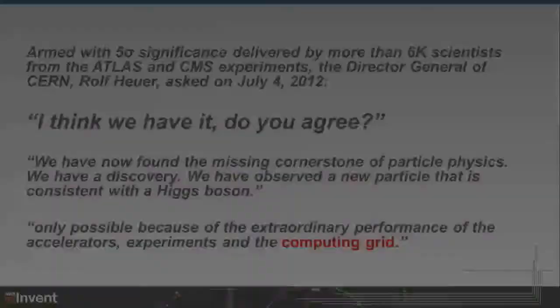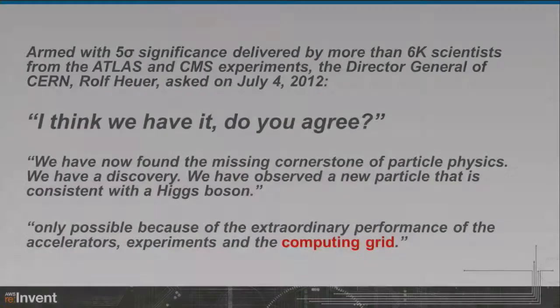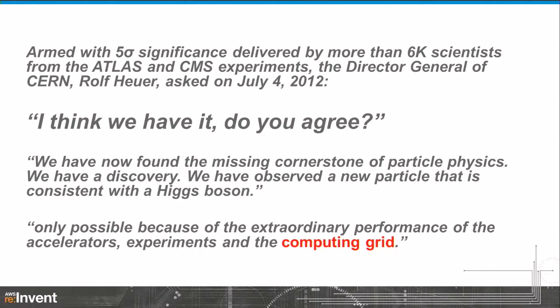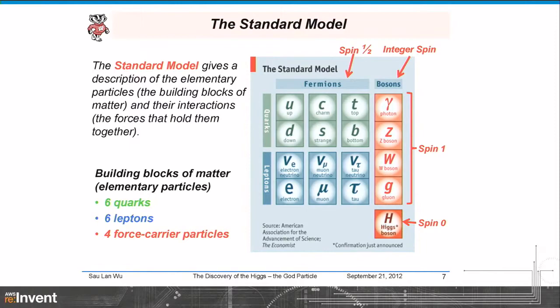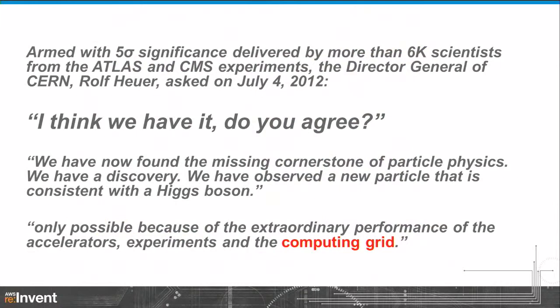The basic message of the first part is that the Director General of CERN announced — or asked the crowd — do we have a discovery, in July 2012. The crowd agreed. And the crowd represented over 6,000 scientists involved in two experiments: ATLAS and CMS.